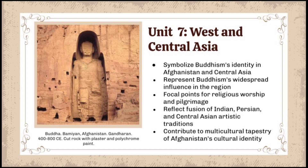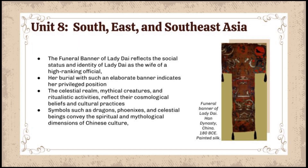For South and Southeast Asia in unit eight, the funeral banner of Lady Dai reflects the social status and identity of Lady Dai within ancient Chinese society. As the wife of a high-ranking official, Lady Dai belonged to the elite class and her burial with such an elaborate banner indicates her privileged position. The imagery on the funeral banner provides insights into the cultural identity of Lady Dai and her community. Scenes depicted such as the celestial realm, mythical creatures, and ritualistic activities reflect cosmological beliefs and cultural practices of ancient China. Symbols such as dragons, phoenixes, and celestial beings convey the spiritual and mythological dimensions of Chinese culture, highlighting the importance of religious beliefs and rituals in shaping identity.